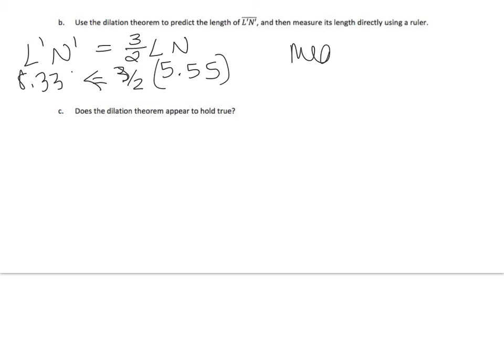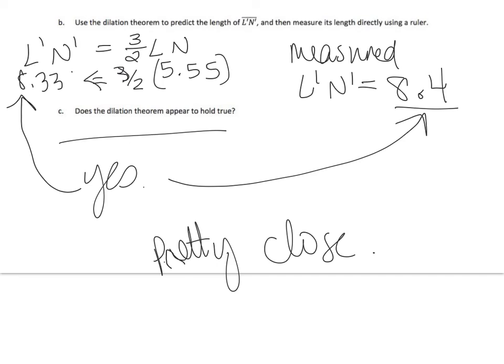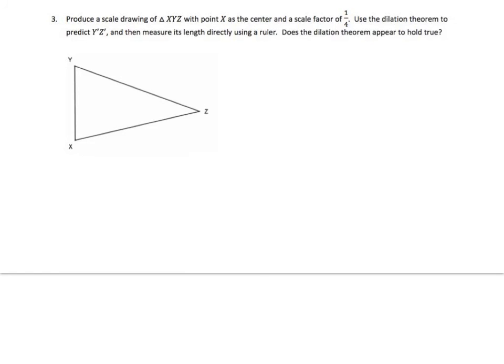Actually, rewind. Sorry, let's do the math first. I gave you my measurements. So I measured LN and I got 5.55 and if I multiply that by three halves, I get 8.33. I measured L prime N prime and I got 8.4. That's pretty close. I'm okay with that. Close enough. Does the dilation theorem appear to hold true? Yes, because my calculated one and my measured one are pretty close, not petty close, pretty close.